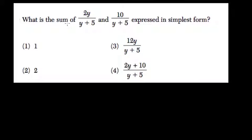So here we're adding two fractions. They ask us for the sum. The denominators are the same. The denominators are both y plus 5. So if that's the case, if you're adding two fractions and your denominators are the same, you could just add the numerators. We get 2y plus 10 over y plus 5.